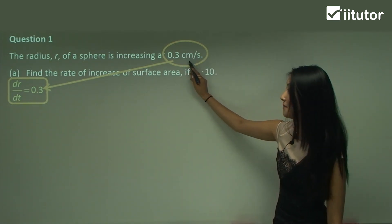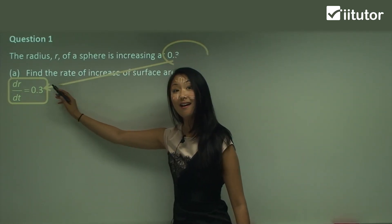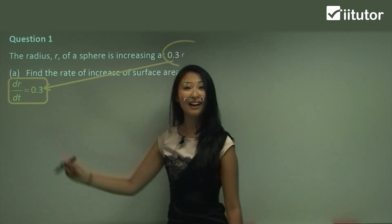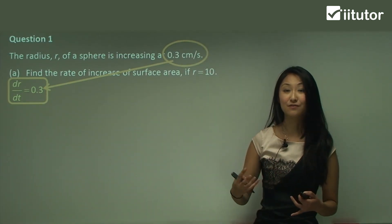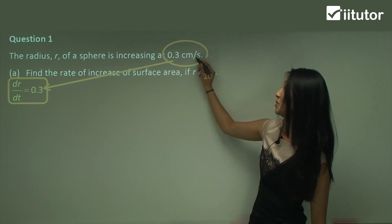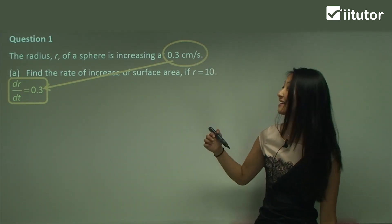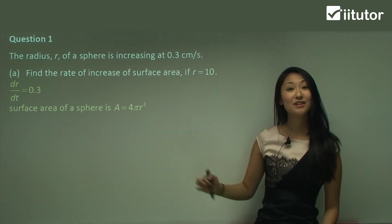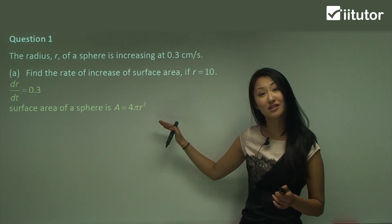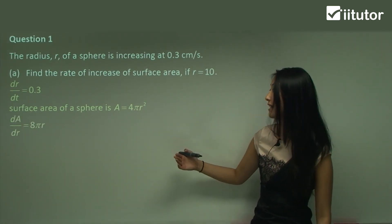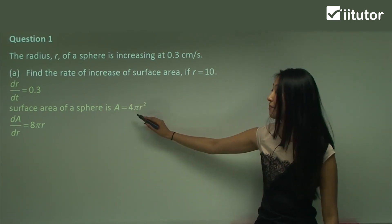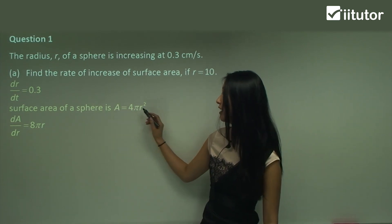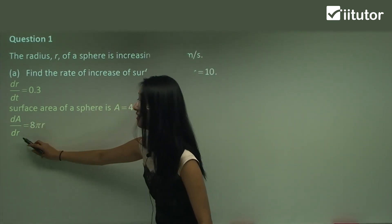That centimetres refers to the radius, so that's why it's dr. And it's over seconds, which is time, so that's why it's on dt. You just assume that if something is a rate of change, it's normally over time — it doesn't always have to be, but generally it is. We know we're going to be working with surface area, so the first thing you do is write out that equation and differentiate it. Taking the 2 down gives 8πr, and because we're differentiating surface area in terms of r, that's why it's dA on dr.